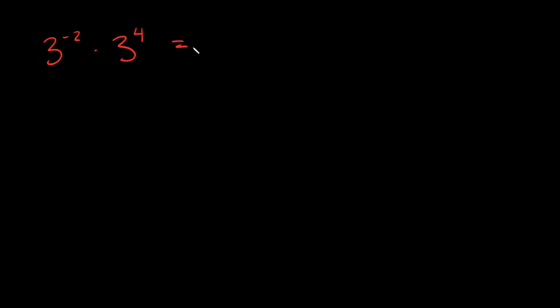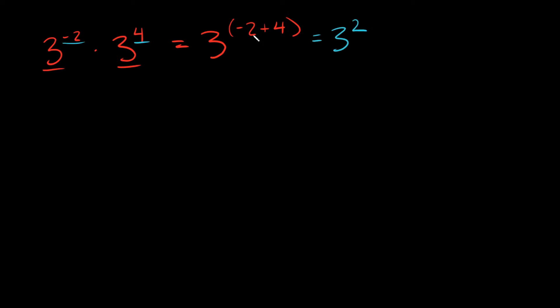Now let's introduce some negative exponents. What if I gave you 3 to the negative 2 times 3 to the 4th? We keep our base of 3, and then we add the exponents: negative 2 plus positive 4 equals positive 2. So this simplifies to 3 to the positive 2, and 3 squared is simply 9.